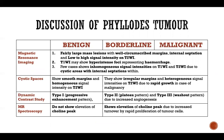In the discussion of phyllodes tumour: all three types — benign, borderline, and malignant — show more or less the same MRI findings: large mass lesions with well-circumscribed margins, internal septations, and low to high signal intensity on T2-weighted images. Sometimes on T1-weighted images, hyperintense foci are seen representing hemorrhage. In benign cases, cystic spaces show smooth margins and homogeneous signal intensity on T2. In borderline and malignant cases, they show irregular margins with heterogeneous signal intensities due to rapid growth. On dynamic contrast study, benign lesions show progressive enhancement (Type 1); borderline and malignant show plateau (Type 2) or washout (Type 3) patterns due to increased angiogenesis. On MR spectroscopy, benign lesions do not show a choline peak, whereas borderline and malignant lesions do show a choline peak.